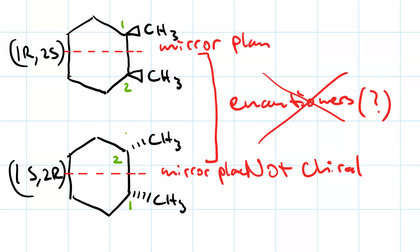For carbon number 1, this would be priority A. This would be B. And this would be C. And let's not forget our implied hydrogen. So, we would be counterclockwise with the hydrogen on the wedge. Which would make the designation of this carbon, R.